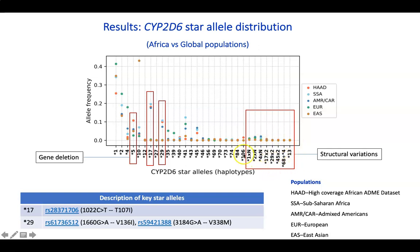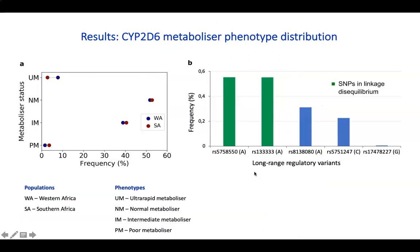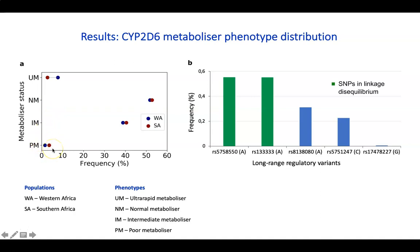Looking at the distribution of metabolizer status, we see that there is a higher frequency of ultra-rapid metabolizers in western Africa compared to southern African populations, whereas it is the reverse when it comes to poor metabolizers. This is because of the different allele distributions across these populations.